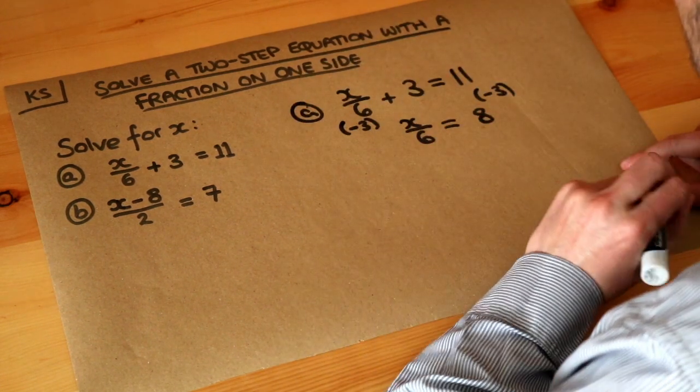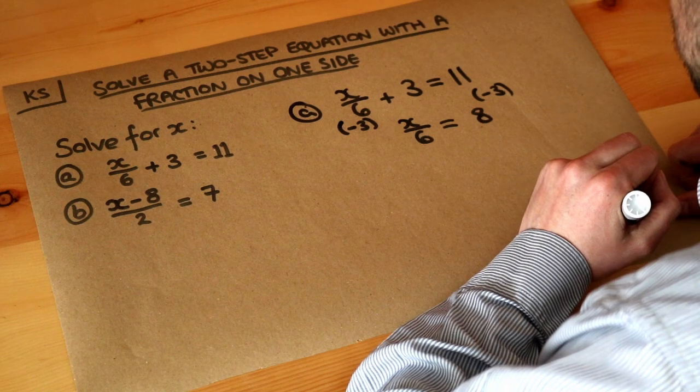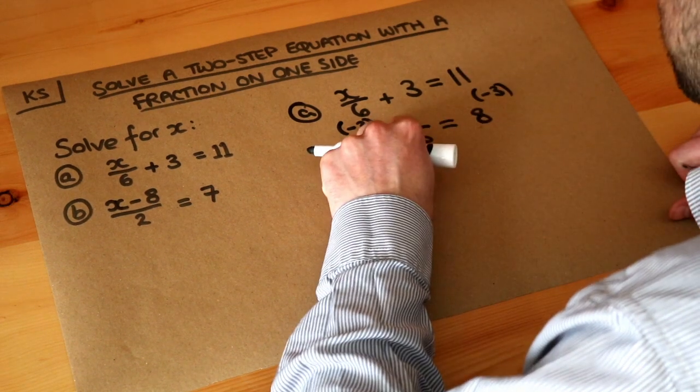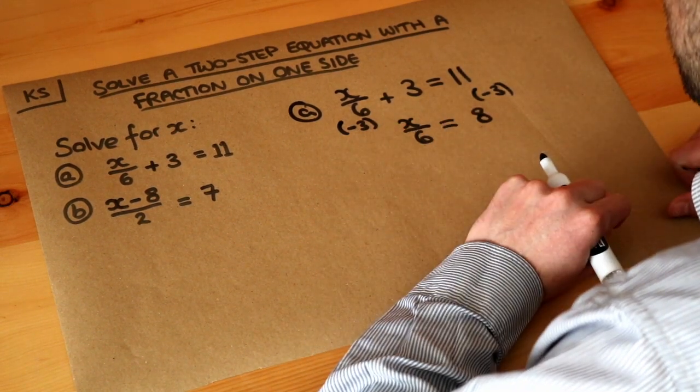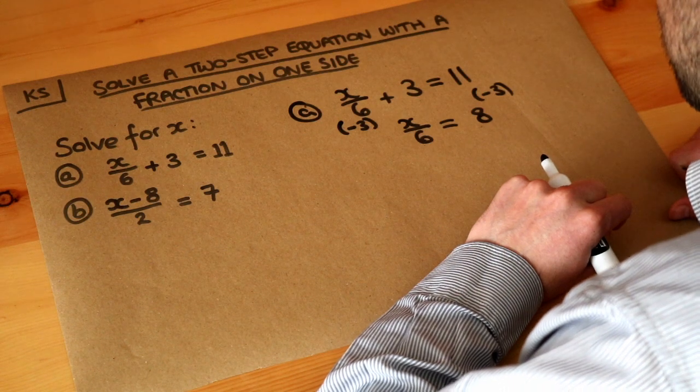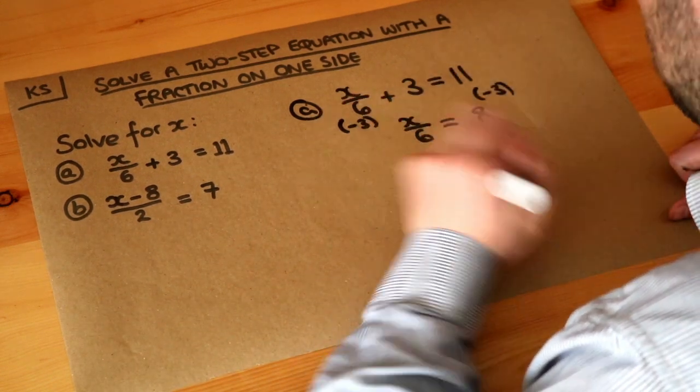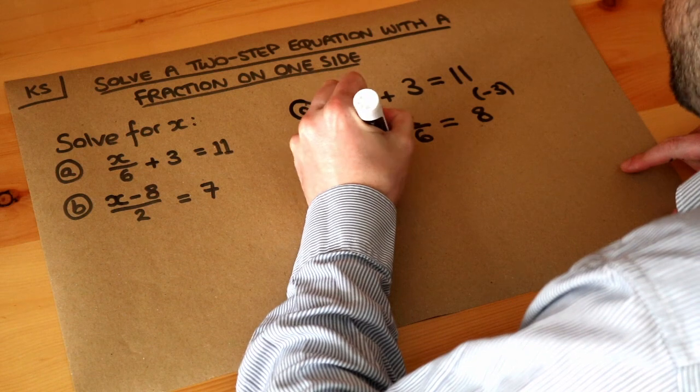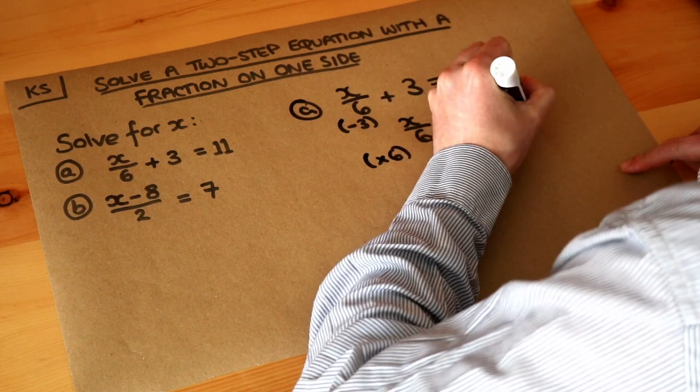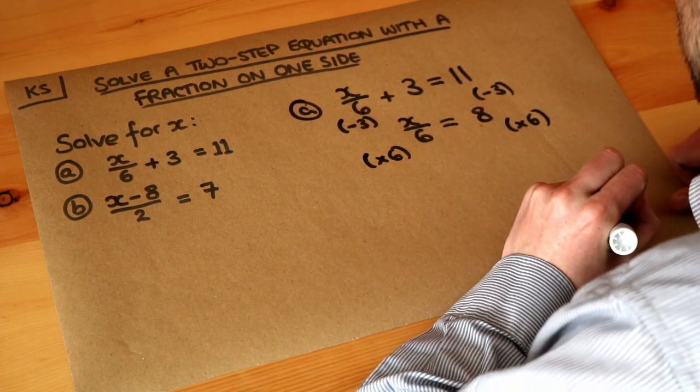Let's apply the same principle. We undo the last thing done to the variable, the x in this case. x has been divided by 6. How do we get rid of the divide by 6? Well the opposite of divide by 6 is multiplying by 6. We multiply both sides of the equation by 6.